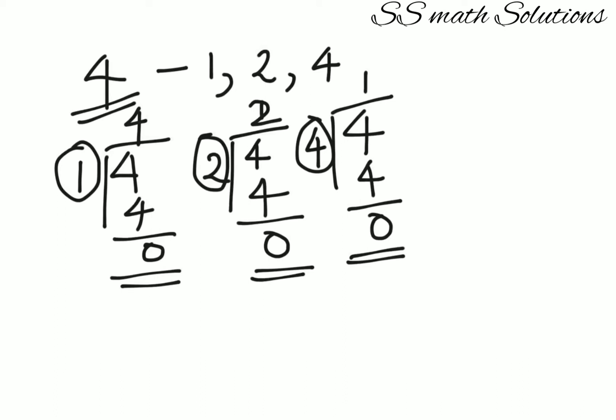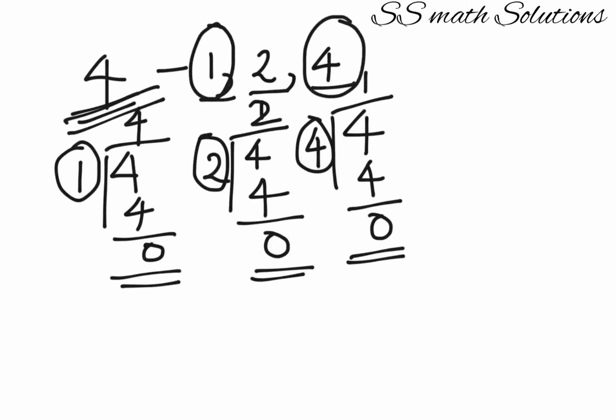Now why did we calculate the factors? Because prime numbers have only two factors: the number itself and one. But for 4, we got three factors: 1, 2, and 4. If 4 had only factors 1 and 4, we could call it prime — but since it also has 2 as a factor, four is not a prime number.